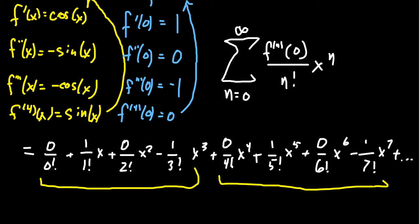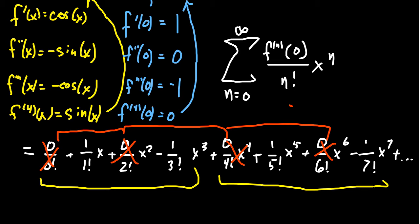Whenever there's a coefficient of 0, that term vanishes. The zeros occur at x squared, x to the 4th, x to the 6th, x to the 8th — all the even powers of x are gone. Only the odd powers of x survive, and they alternate positive, negative, positive, negative.